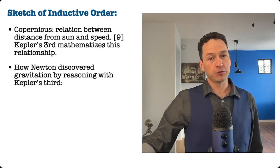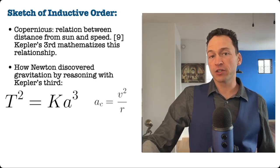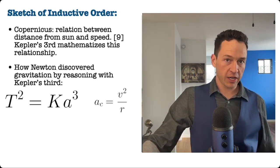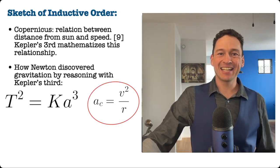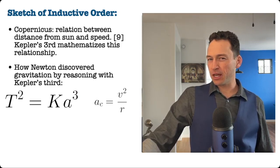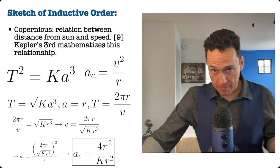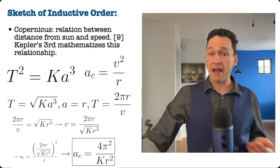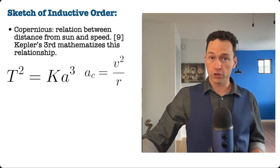Later, in lecture four, Newton considered Kepler's third law and this equation, which identifies the acceleration required to keep a body in circular motion. He used these two generalizations to ask the following question: if the acceleration required for circular motion is this, and the sun is making planets move in accordance with Kepler's third law, then can I put these two principles together to find the acceleration that the sun causes planets? So he then made this mathematical inference, which you can examine by pausing the video. The important part is that Kepler's third and the principle of circular motion can be used to infer that the sun causes an acceleration in accordance with this equation.